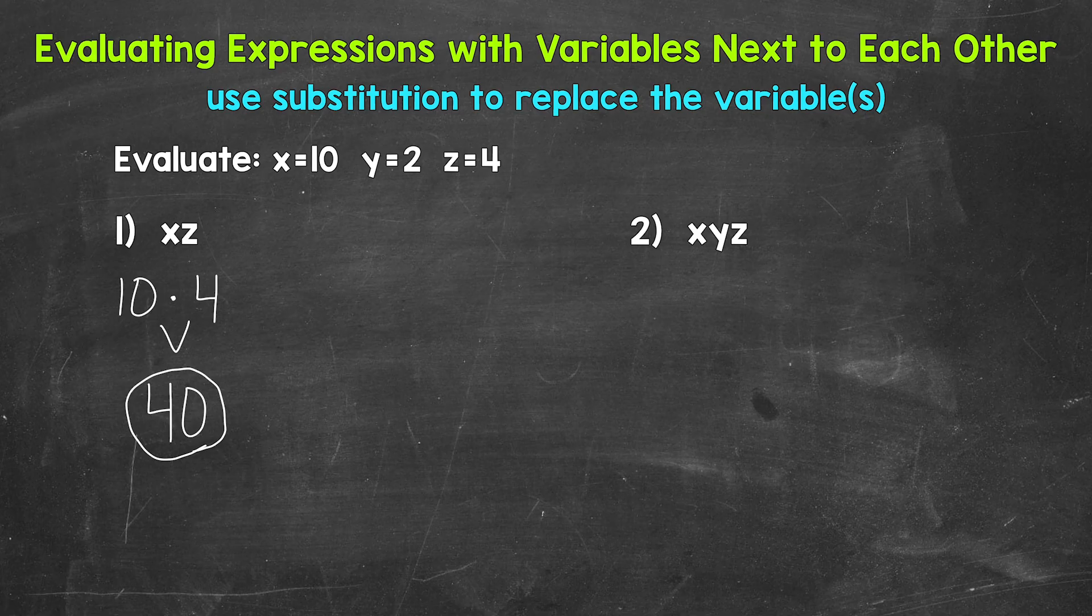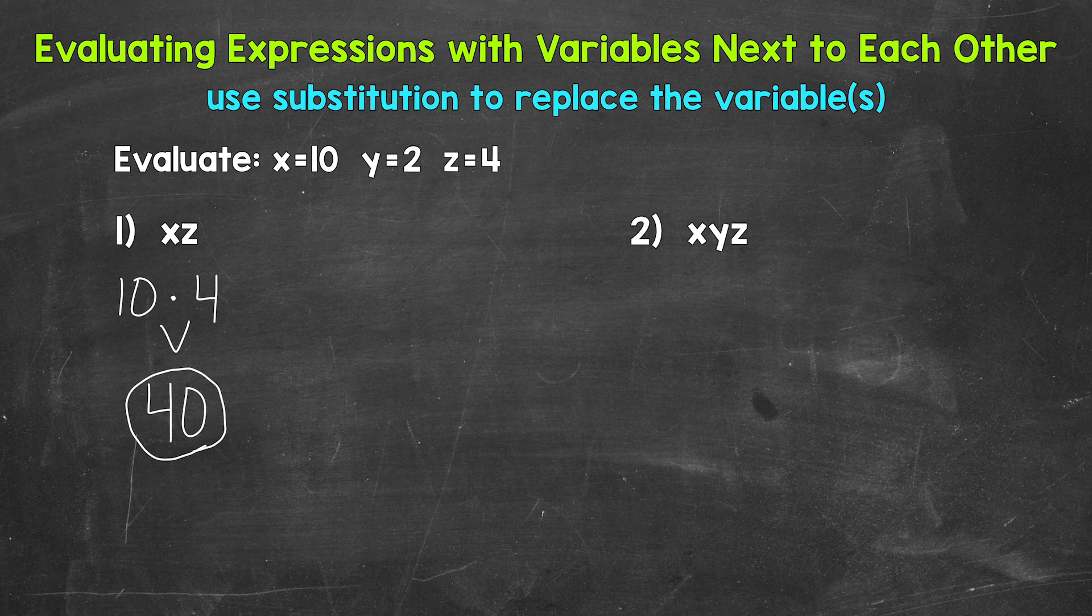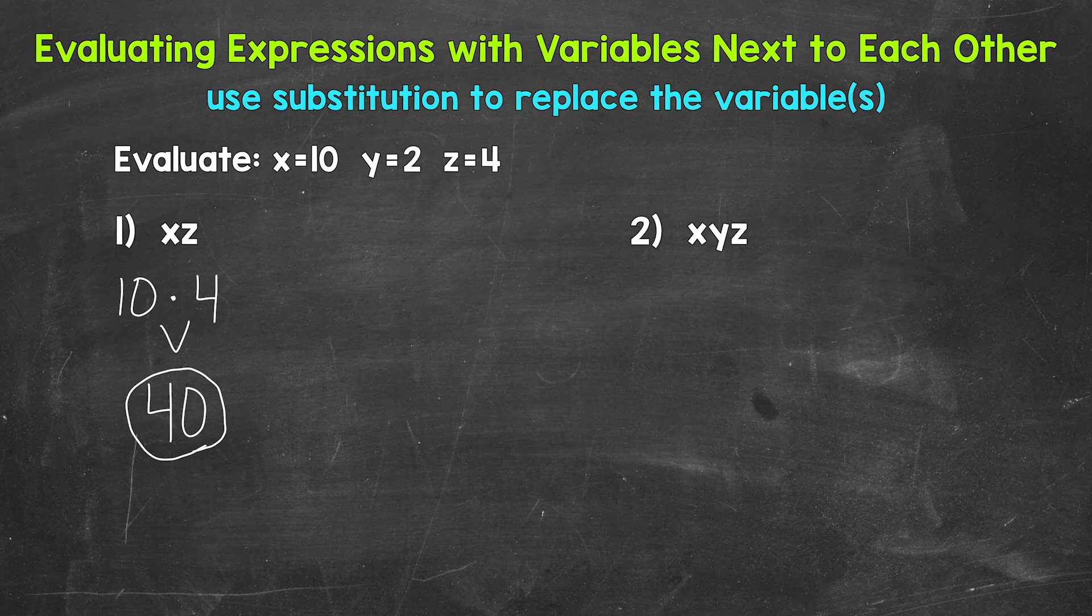Now one thing I do want to mention about plugging in the values for the variables, make sure to use something to represent multiplication. For example, I used a dot. Putting the numbers next to each other would not represent multiplication. For example, the 10 and the 4 next to each other would look like 104, not multiplication. Whenever we have variables next to each other, or a number next to a variable, that does represent multiplication though. So something to keep in mind.